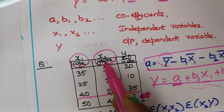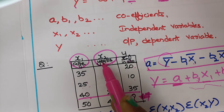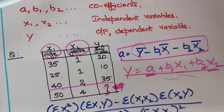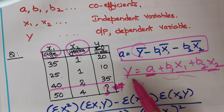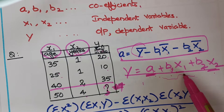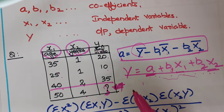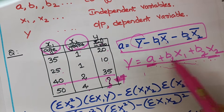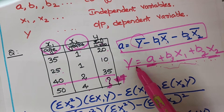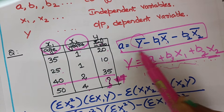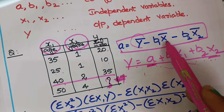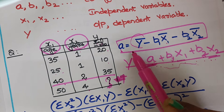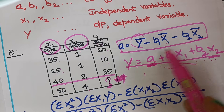x1 and x2 are both the independent variables. Based on x1 and x2 we are going to calculate the y value using the multiple regression equation: y equals a plus b1·x1 plus b2·x2. We need to calculate a, b1, and b2. To calculate a, the formula is: a equals y-bar minus b1·x1-bar minus b2·x2-bar. Take note of these formulas.